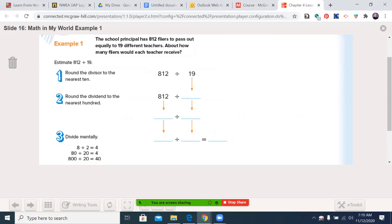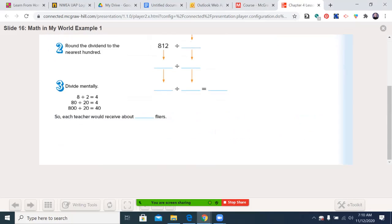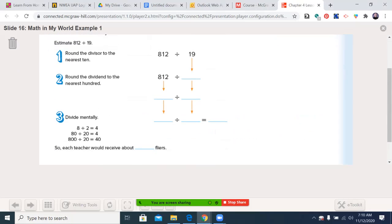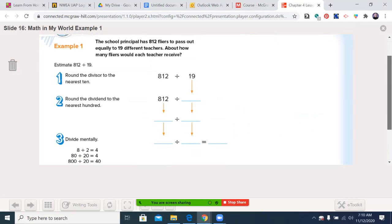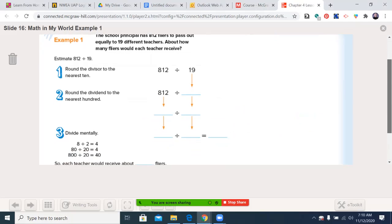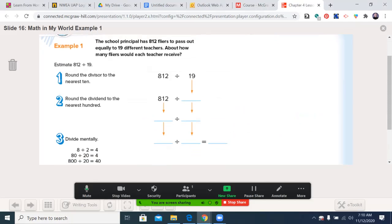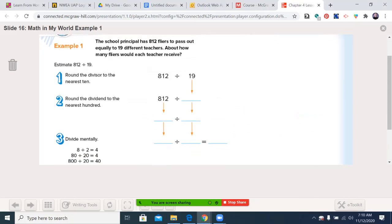We're on math in my world. Example, Bejic. I'm going to try to adjust this just so. The school principal has 812 flyers to pass out equally to 19 different teachers. About how many flyers would each student or teacher receive?